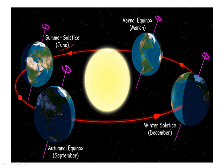If we talk about summer solstice, the summer solstice is the longest day of the year, meaning it has the most hours of sunlight. And if we talk about the winter solstice, then the winter solstice is the shortest day of the year and has the fewest hours of daylight.